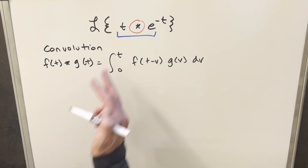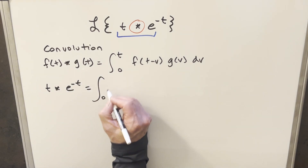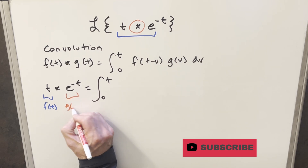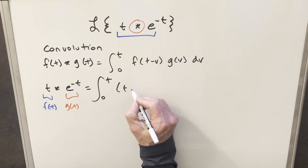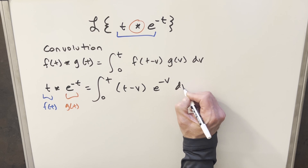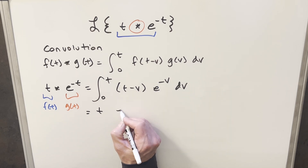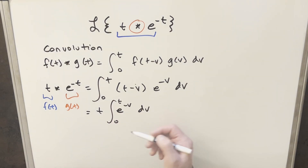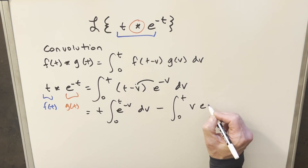Let's calculate the convolution of t and e to the minus t. We'll integrate from 0 to t. We'll let t be our f of t and e to the minus t be our g of t — we could choose either way and it won't matter. Taking f of t and shifting it with input t minus v, this piece becomes t minus v. Taking g of t and writing it in v, this becomes e to the minus v dv. From here I can split this into two integrals: t distributing into e to the minus v — since t with respect to v is a constant, I bring it out front — minus the integral from 0 to t of v times e to the minus v dv.